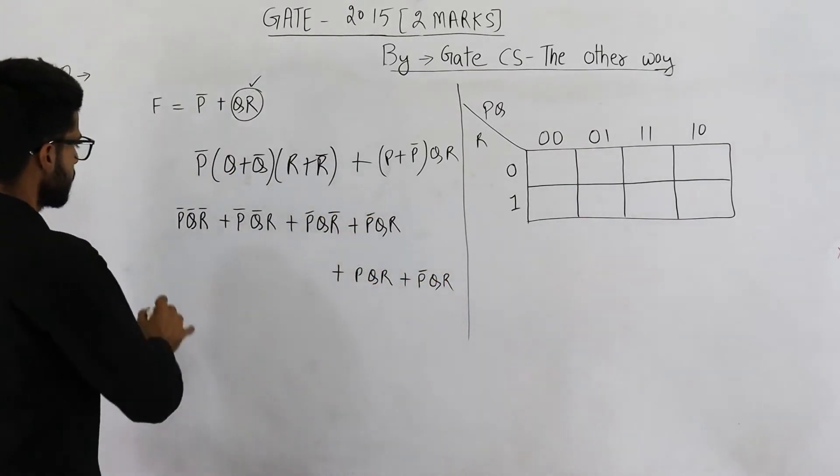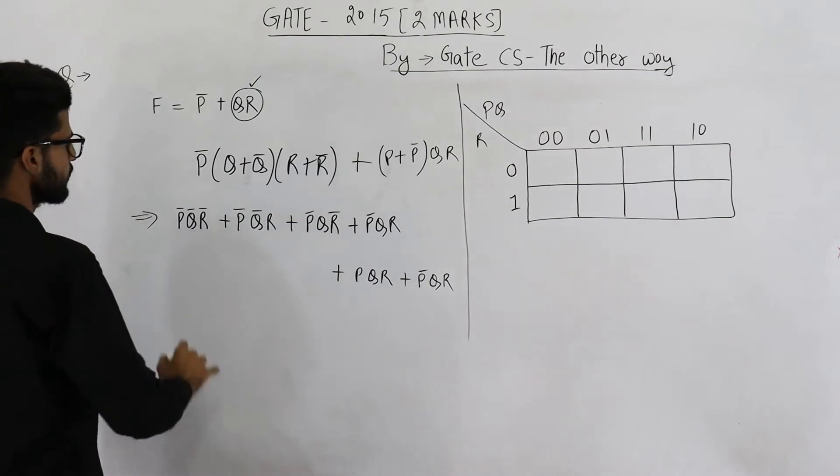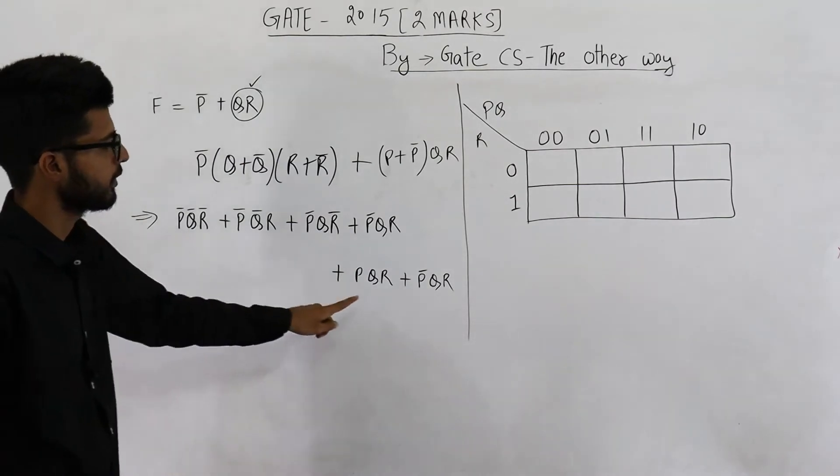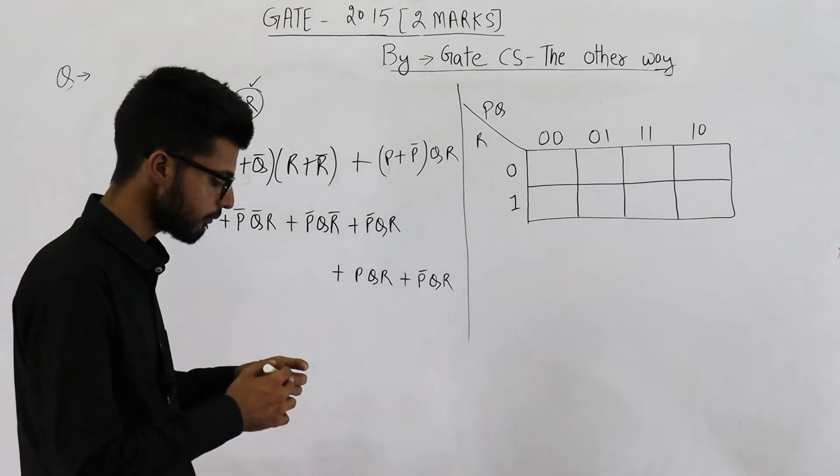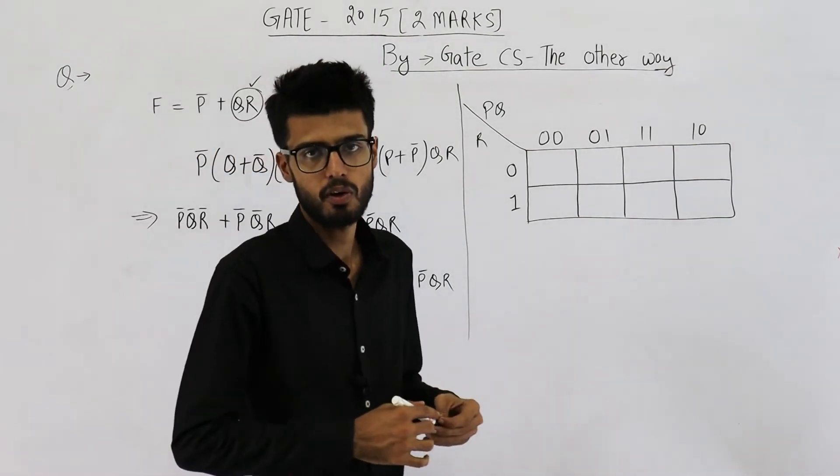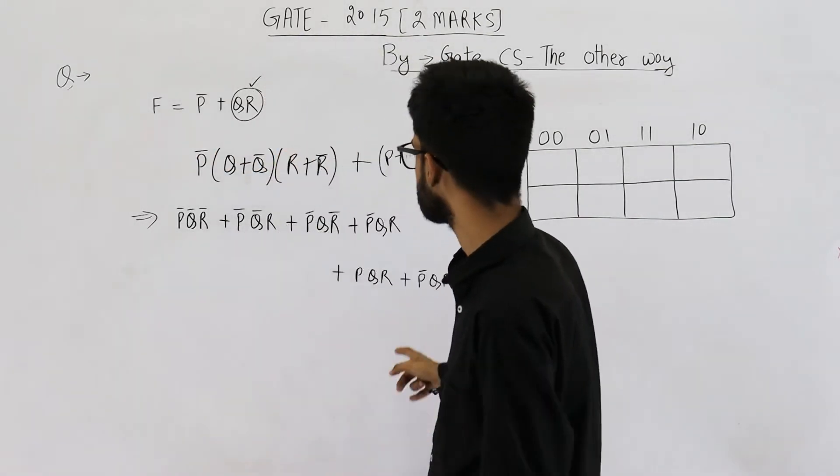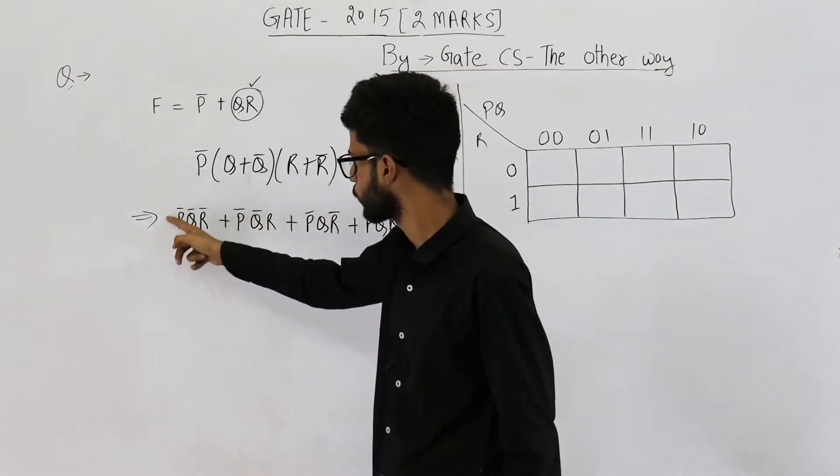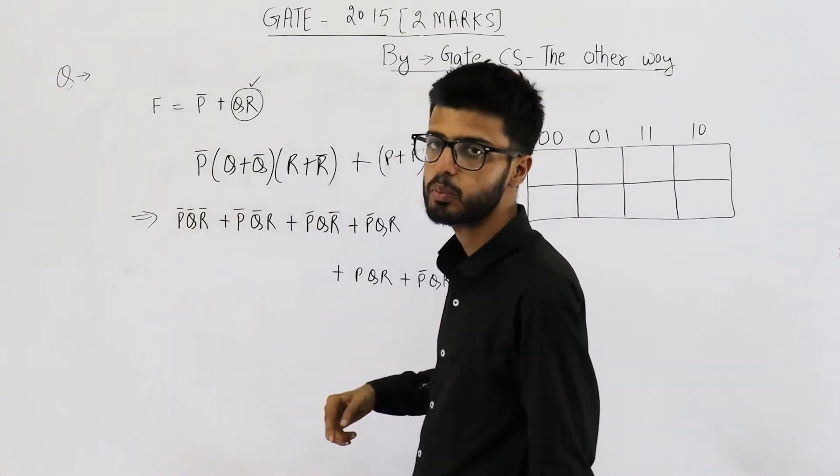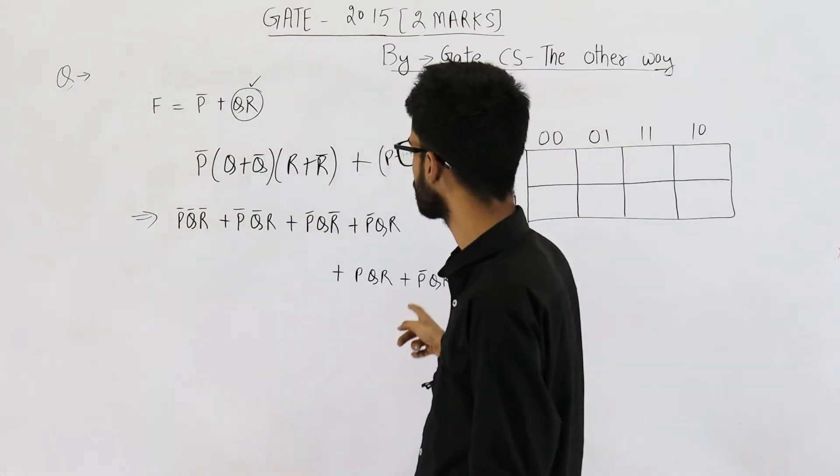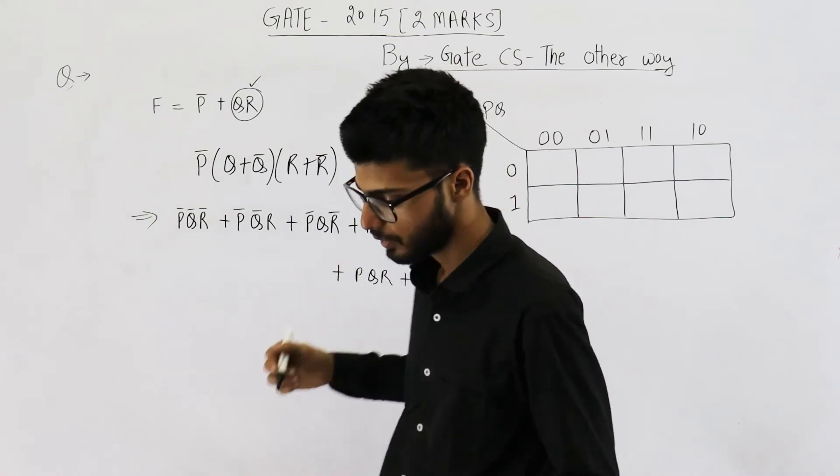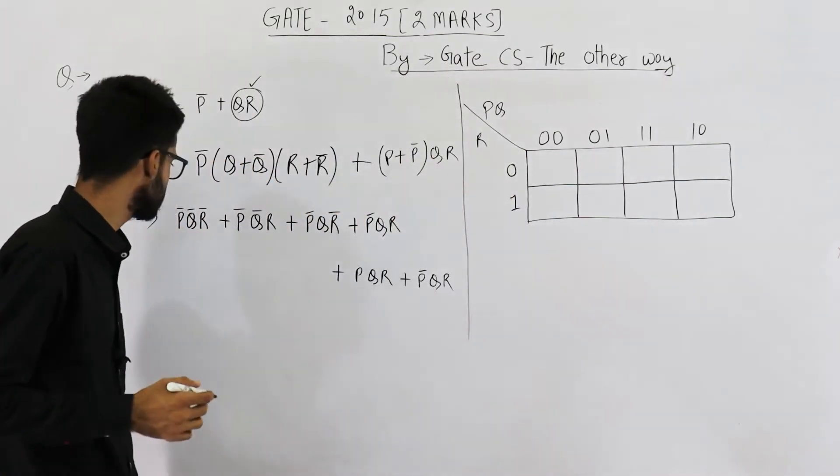So you will be getting these six terms, 4 plus 2, 6. These are all the minterms of the function. Minterms means at all these inputs, function will output high. Let's find out what these inputs are.